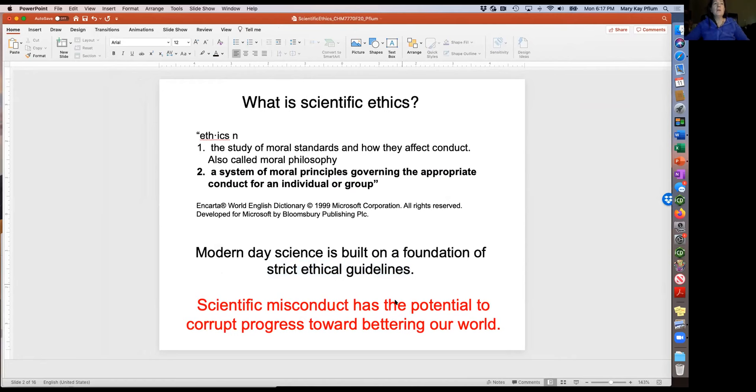And you might ask yourself, why is that important? That's because any kind of misconduct can has the potential to corrupt our progress toward bettering our world. Our credibility as a scientific community expects for us to be honest in every form that we have. We need to be honest, truthful, and present what we learned so that the public can trust us with our science.